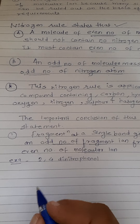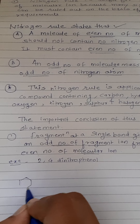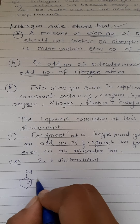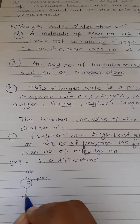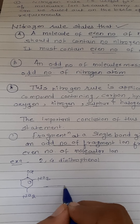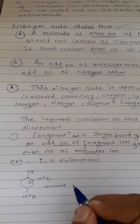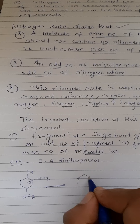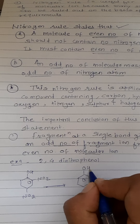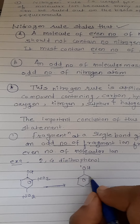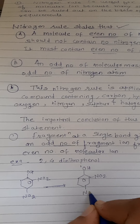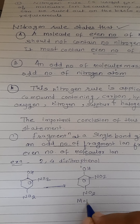Now, the example is 2,4-dinitrophenol. This is the structure of 2,4-dinitrophenol with OH, NO2, and NO2 groups. When 2,4-dinitrophenol undergoes fragmentation, we will get a molecular ion and a fragment ion.